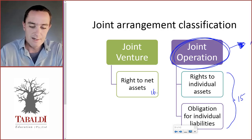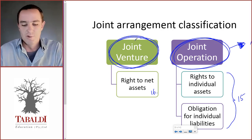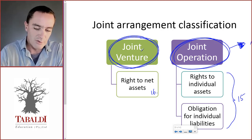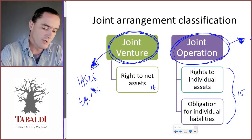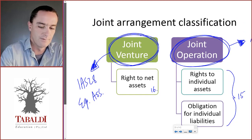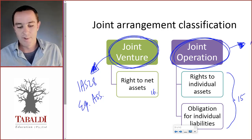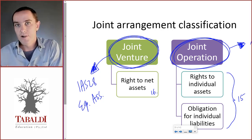Joint ventures are where two or more investors have the rights to the net assets of the company in question. The right to the net assets is essentially the right, as a shareholder, to the equity in the company. If it is a joint venture, we will apply IAS 28 and equity account for it — similar to what we use for investments in associates. A discussion question will address whether the joint arrangement is a joint venture or joint operation, while a calculation question will require journals or parts of the financial statements.